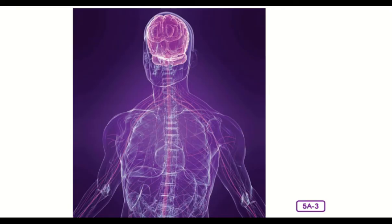First, you made the conscious decision to stand and your brain received that decision. Then, electrical signals were sent out from your brain along nerve fibers to your muscles, telling them to tighten or contract. For every movement that you make, your brain coordinates the timing of muscle contractions, telling your muscles when to tighten, how much to tighten, and for how long. Your nervous system works with your bones and muscles to follow your brain's commands.